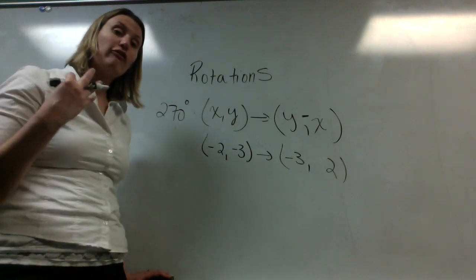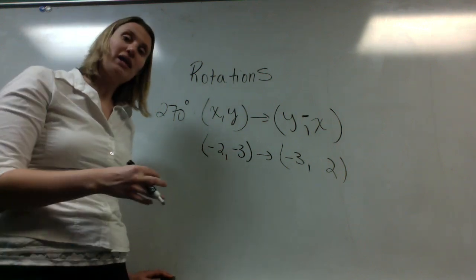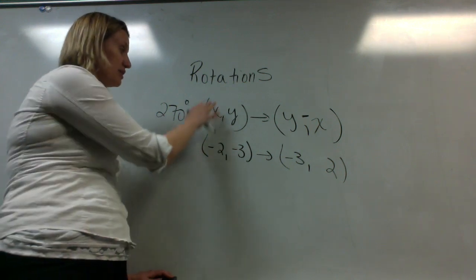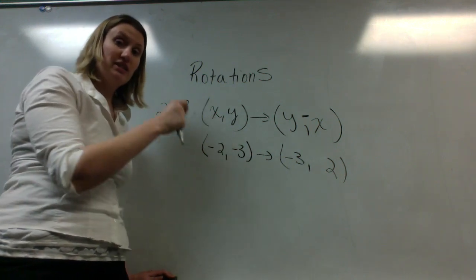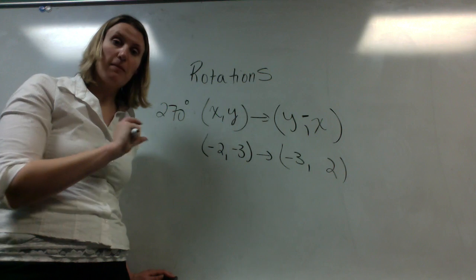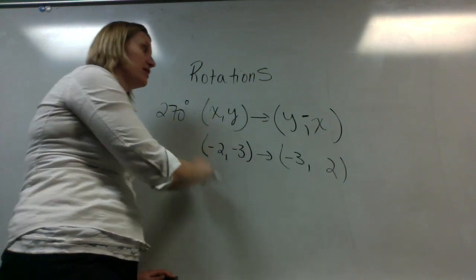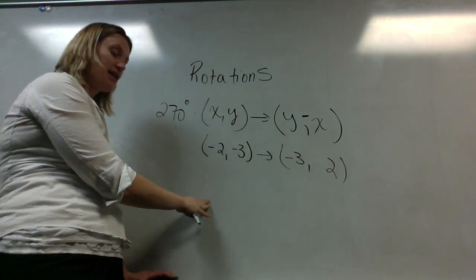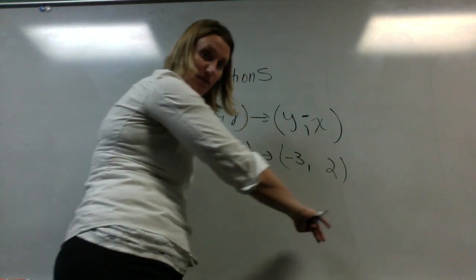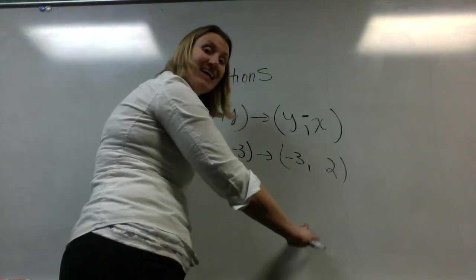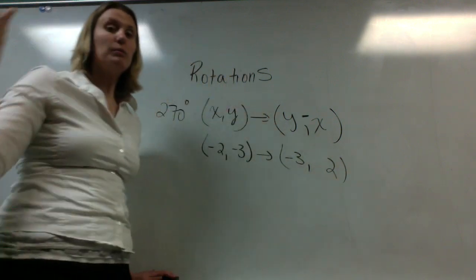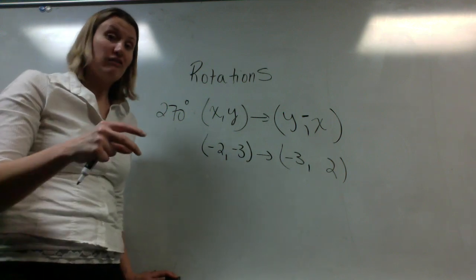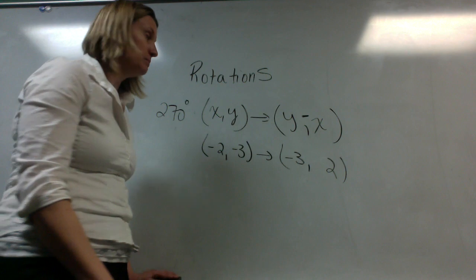If you have to rotate an entire figure, like a triangle or quadrilateral, 90, 180, or 270 degrees, you simply perform this rule for every single point. You take your first point, figure out what the prime will be — what the image will be. Take the second point of your pre-image, figure out what the image will be. Do the same with your third, then go plot the points, and the figure should be rotated accordingly to however many degrees you wanted to rotate it.